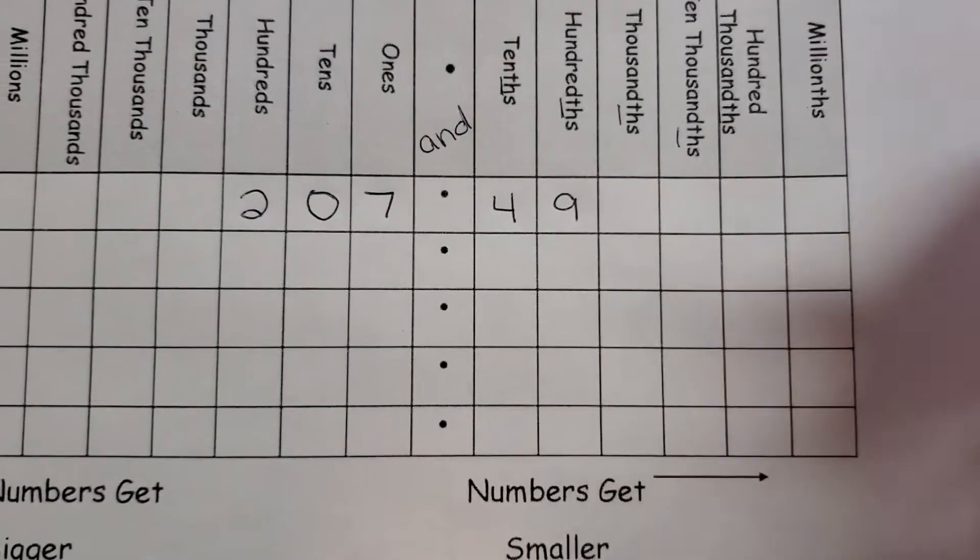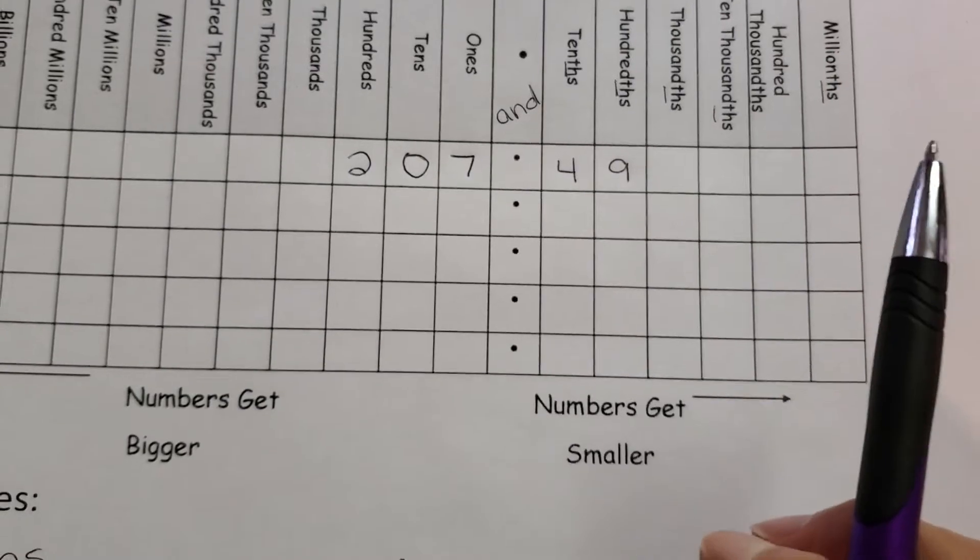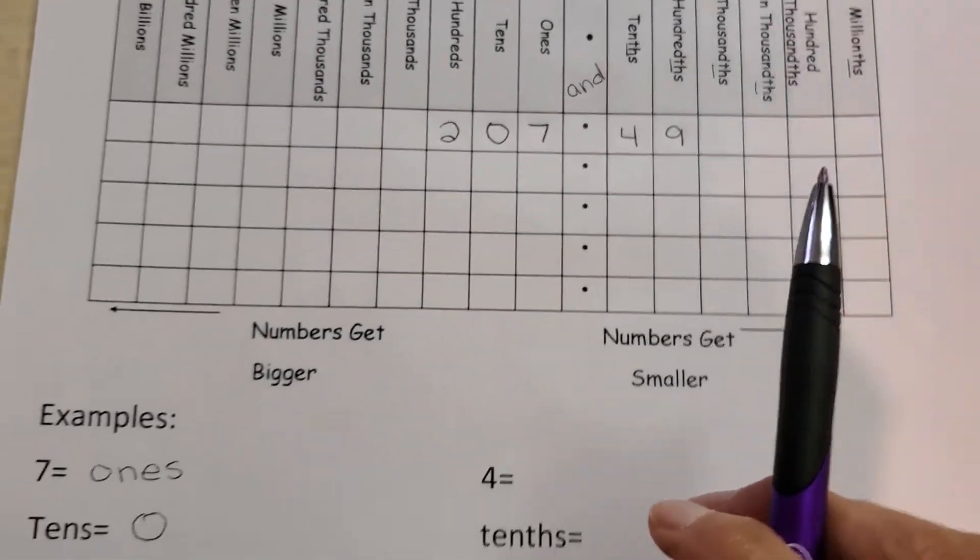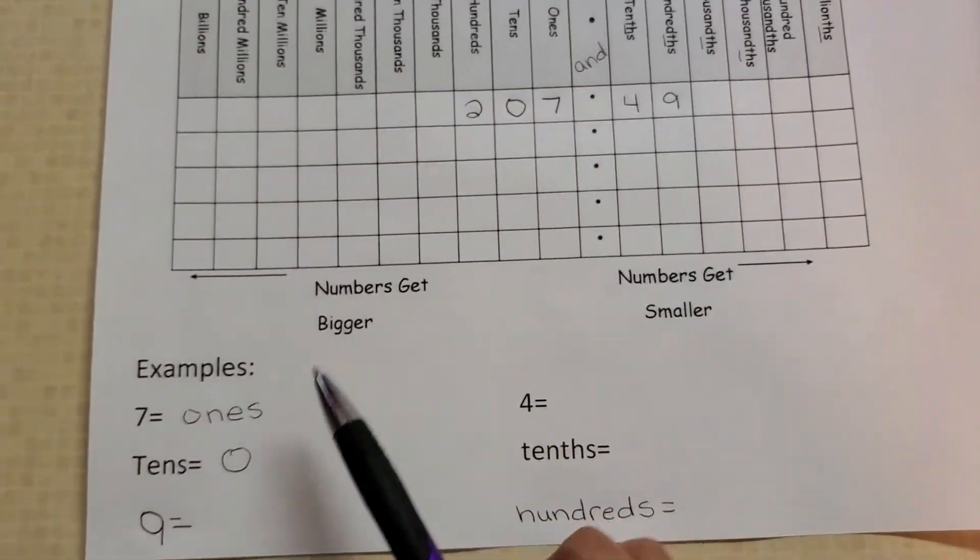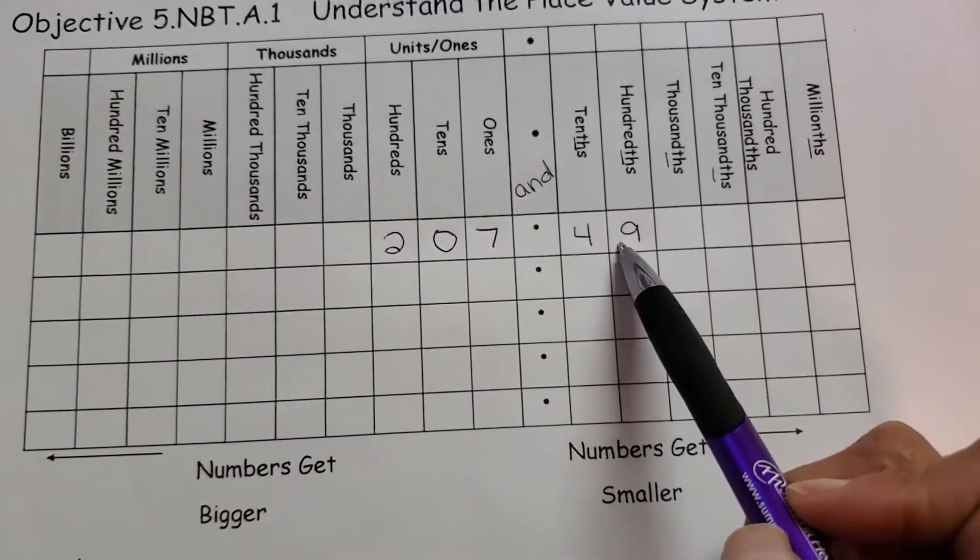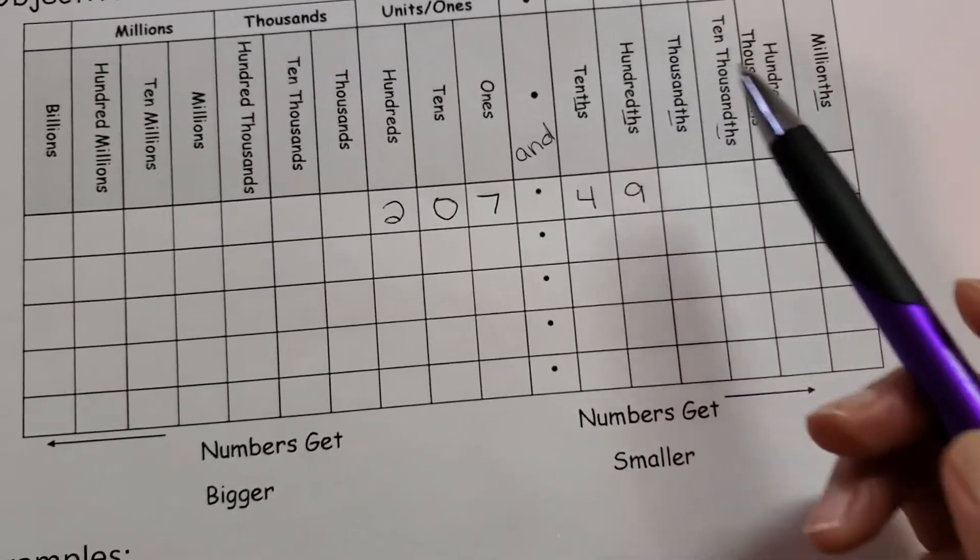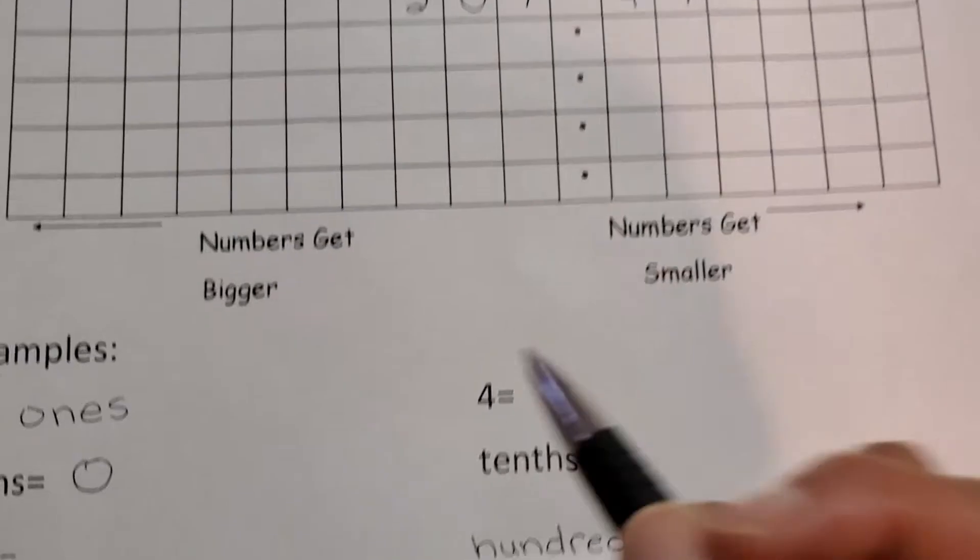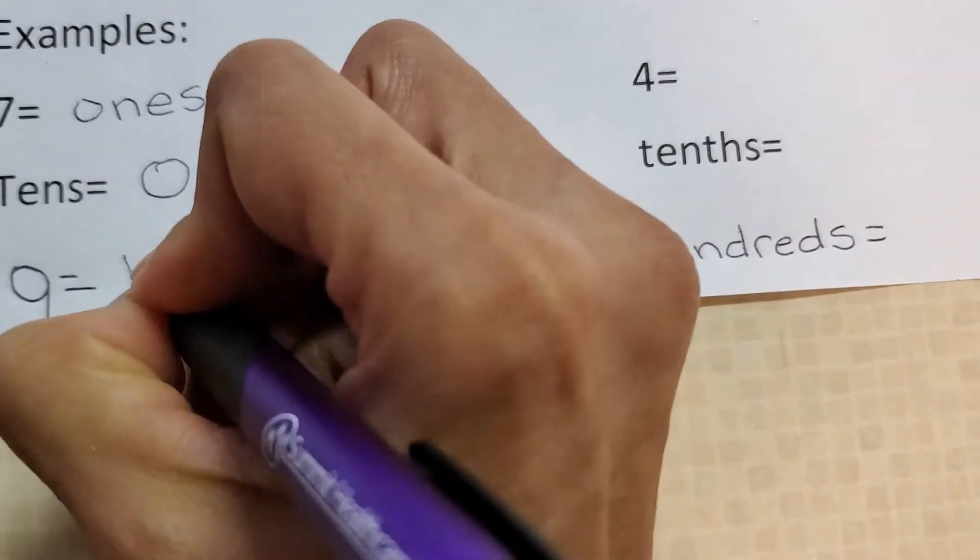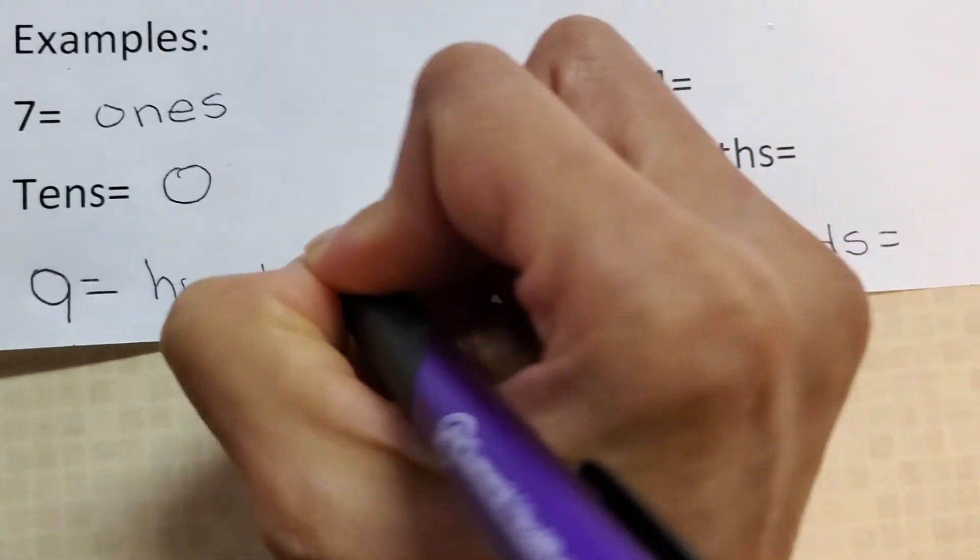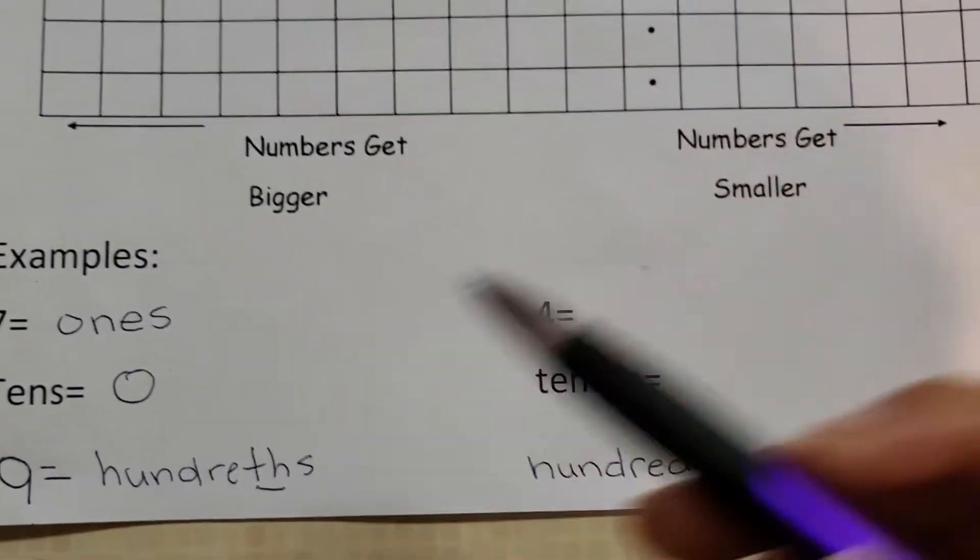All of this side has the th. This side does not have the th. So keep that in mind as you're doing your work today. So number nine, what position is number nine in? Come up here. Nine. Nine is in the hundredths. Make sure you have that th behind it. Okay, so hundredths, th, hundredths.